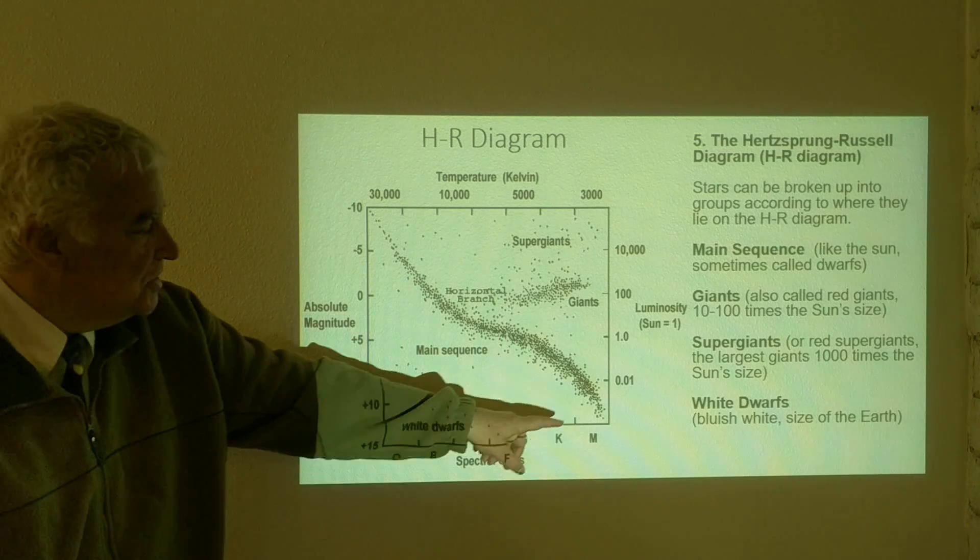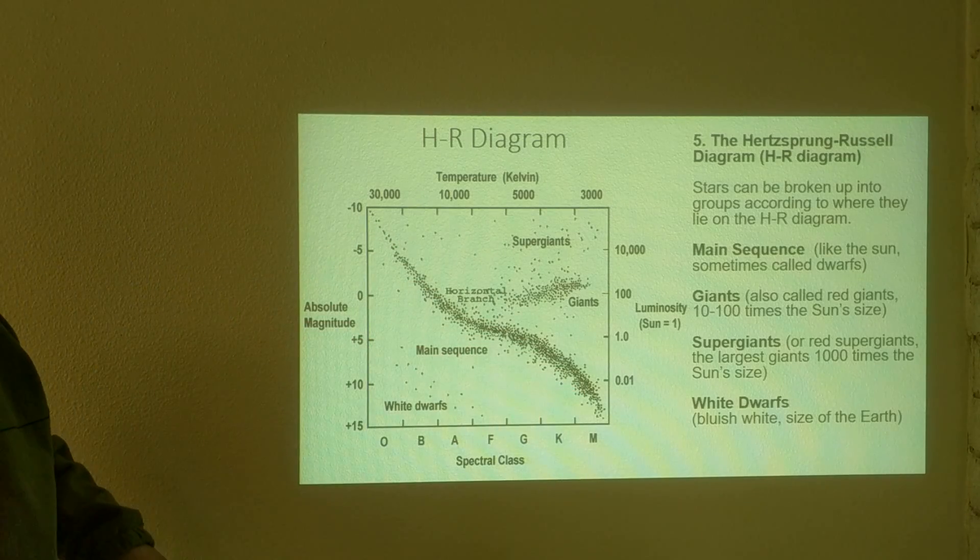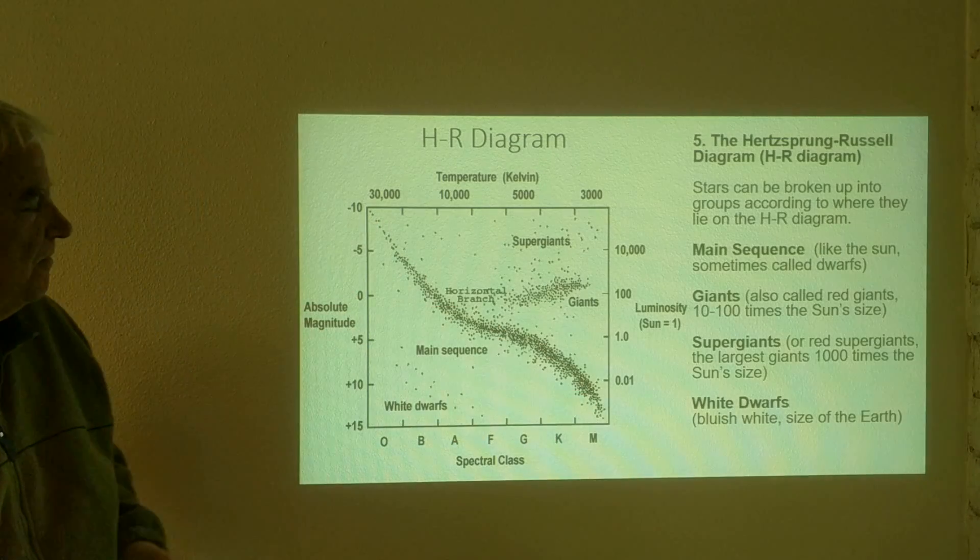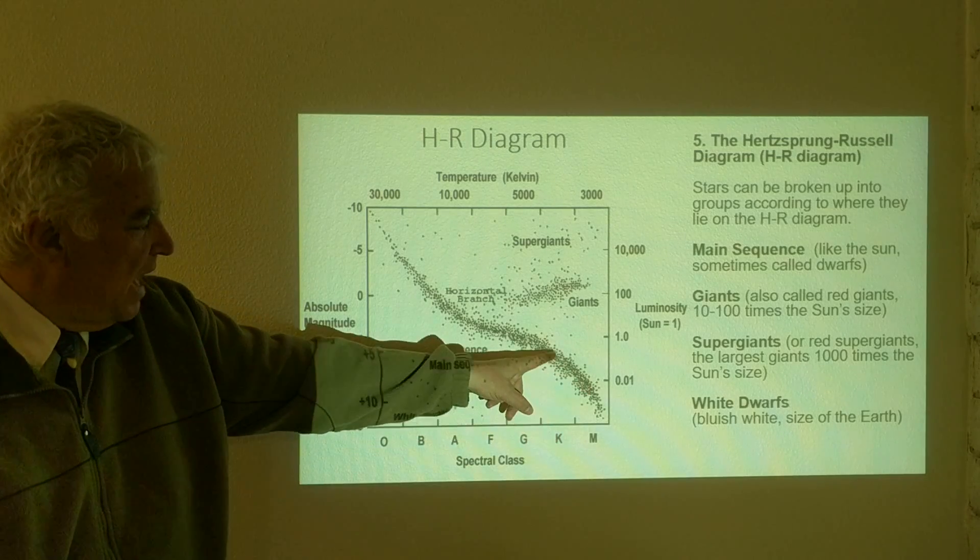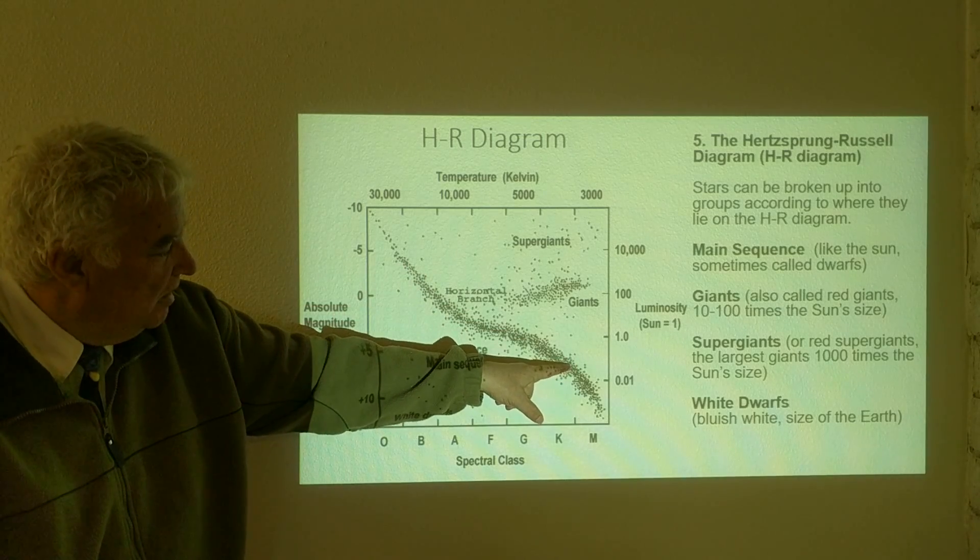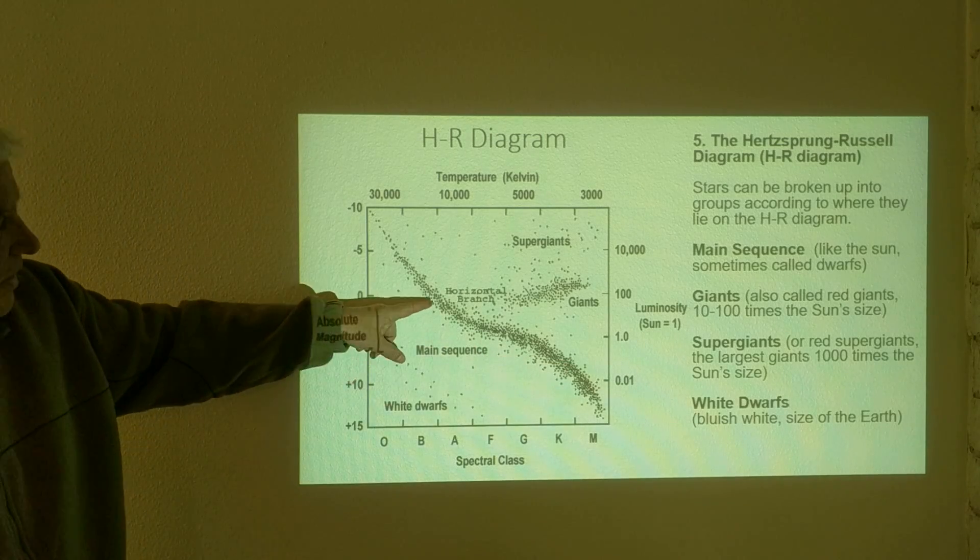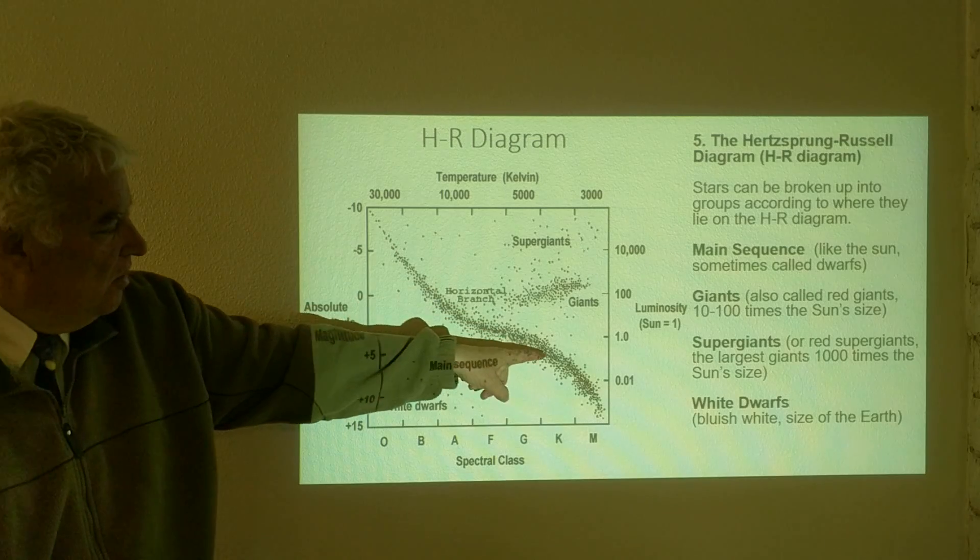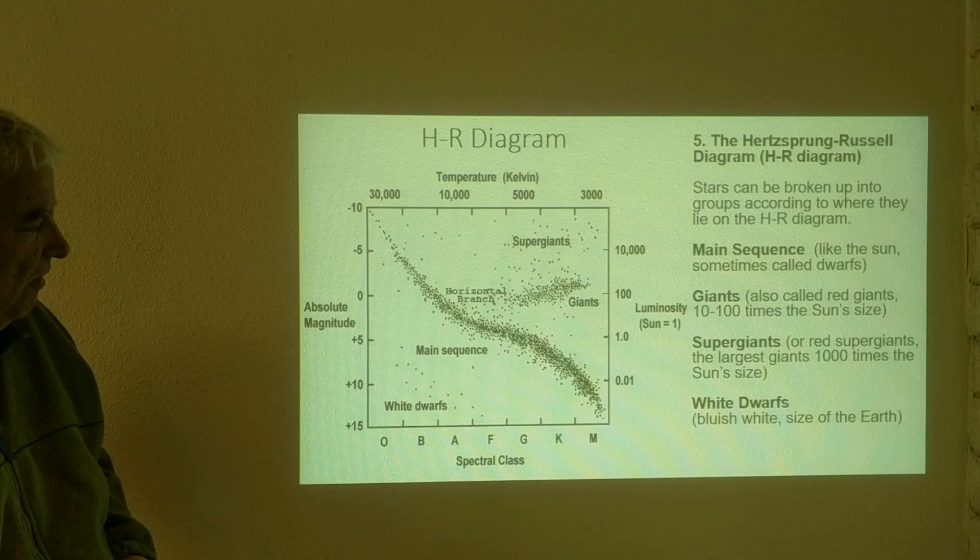So we see that most stars, in fact, 90% of all stars are found on the main sequence of this diagram. And we want to make sure to understand that this is not any kind of path. Stars once on the main sequence will remain more or less in the same position there. They do not move up and down the main sequence, but nine out of ten of all stars that we see are on this main sequence part of this diagram.